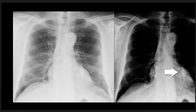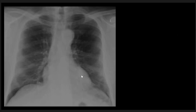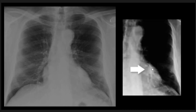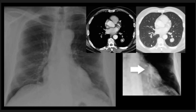Here is a patient with a retrocardiac mass lesion on the left side, seen well on the penetrated view. The CT scan shows a mass lesion with calcification — this is a benign mass lesion, specifically a hamartoma with popcorn calcification.